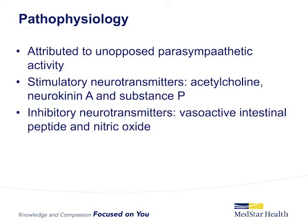The exact pathogenesis of ACPO has not been determined. However, the clinical syndrome is attributed to unopposed parasympathetic activity after the sympathetic supply has been disrupted. The sympathetic innervation to the proximal colon is supplied by the splanchnic nerves, while the vagus nerves supply the parasympathetic input. Recent studies examining gut motility disorders have been focusing on the various neurotransmitters mediating the enteric nervous system. Acetylcholine, neurokinin A, and substance P are the predominant stimulatory neurotransmitters. The predominant inhibitory neurotransmitters are vasoactive intestinal peptide and nitric oxide.